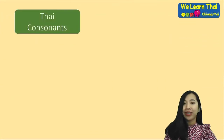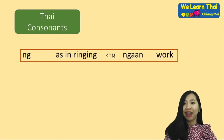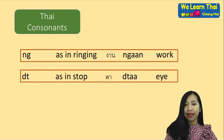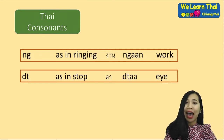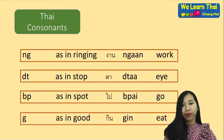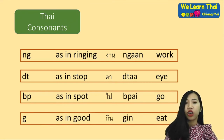For Thai consonants, the first one we have is 'ng', as in 'linking', like 'ngaan' — this means 'work'. Next, 'dt' — as in 'stop'. For example, 'dtaa'. Next one: 'bp' — as in 'sport'. For example, 'bpai' — this means 'go'. And the last one: 'g' — as in 'good'. For example, 'gin' — this means 'to eat'.